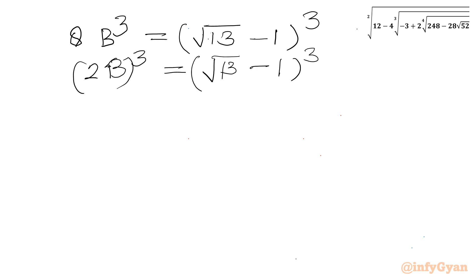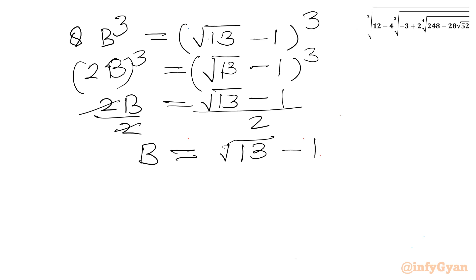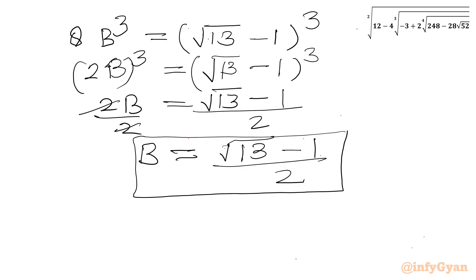Taking the cube root of both sides gives 2B = √13 − 1. Dividing both sides by 2, our B value is (√13 − 1) / 2. This is our cube root B.